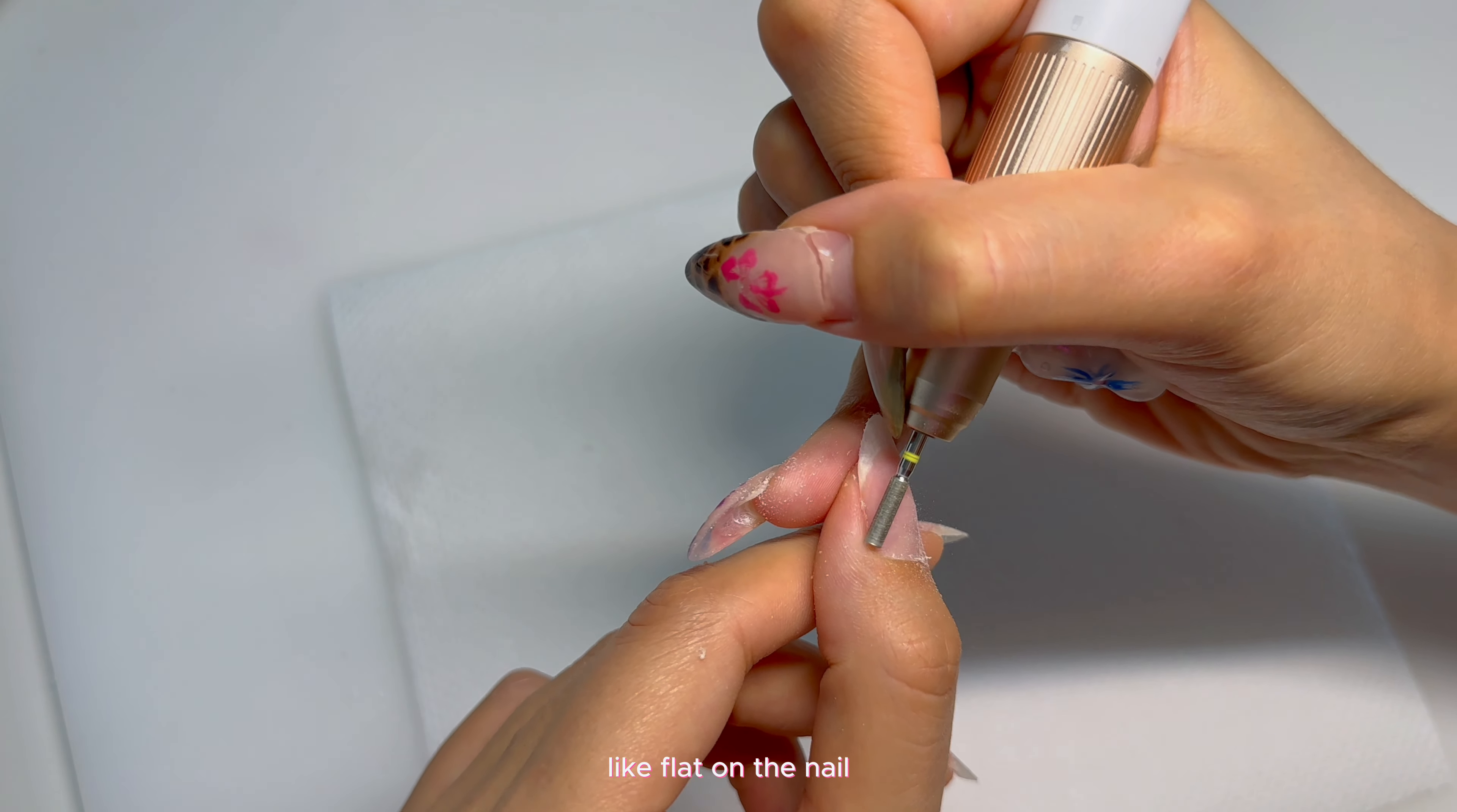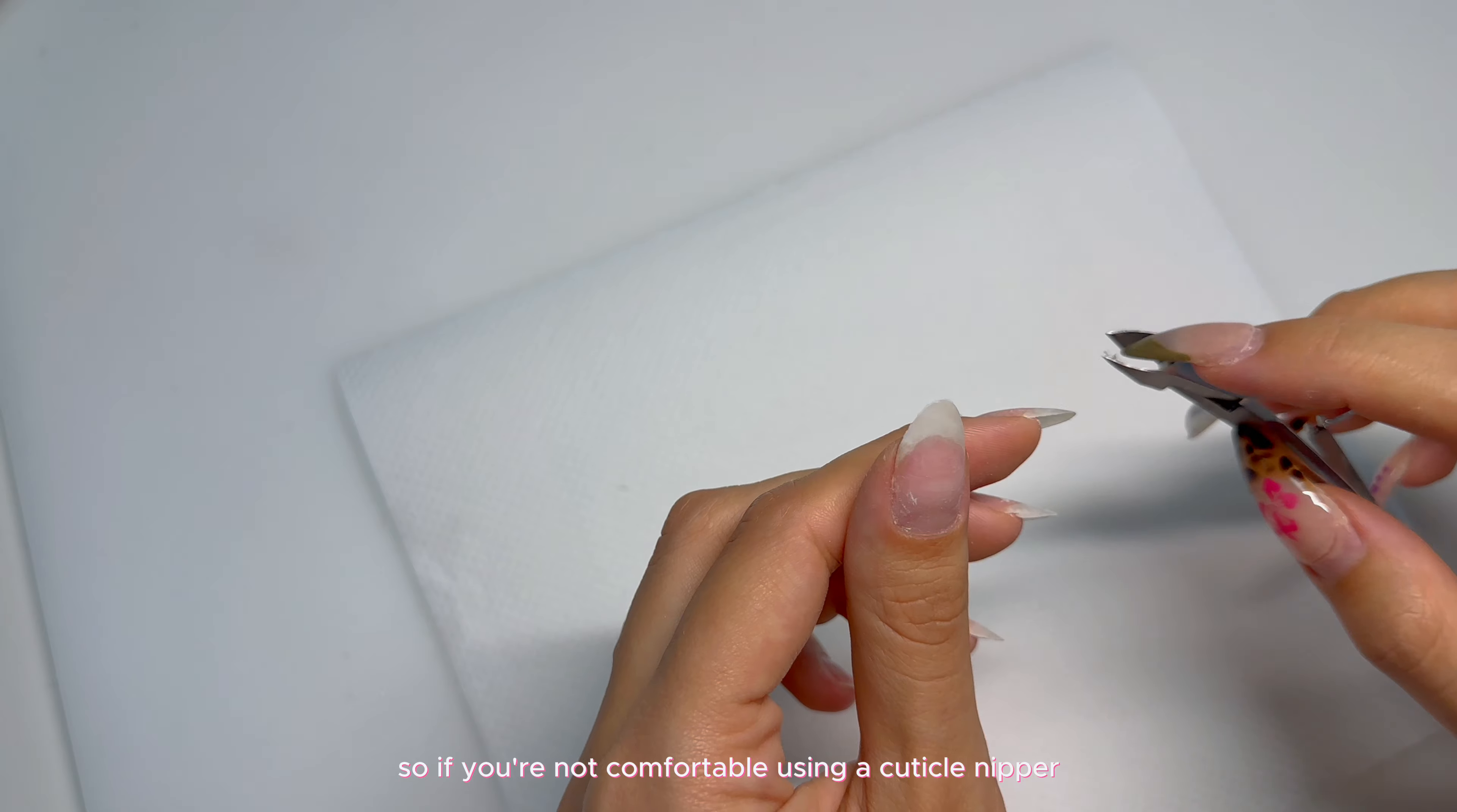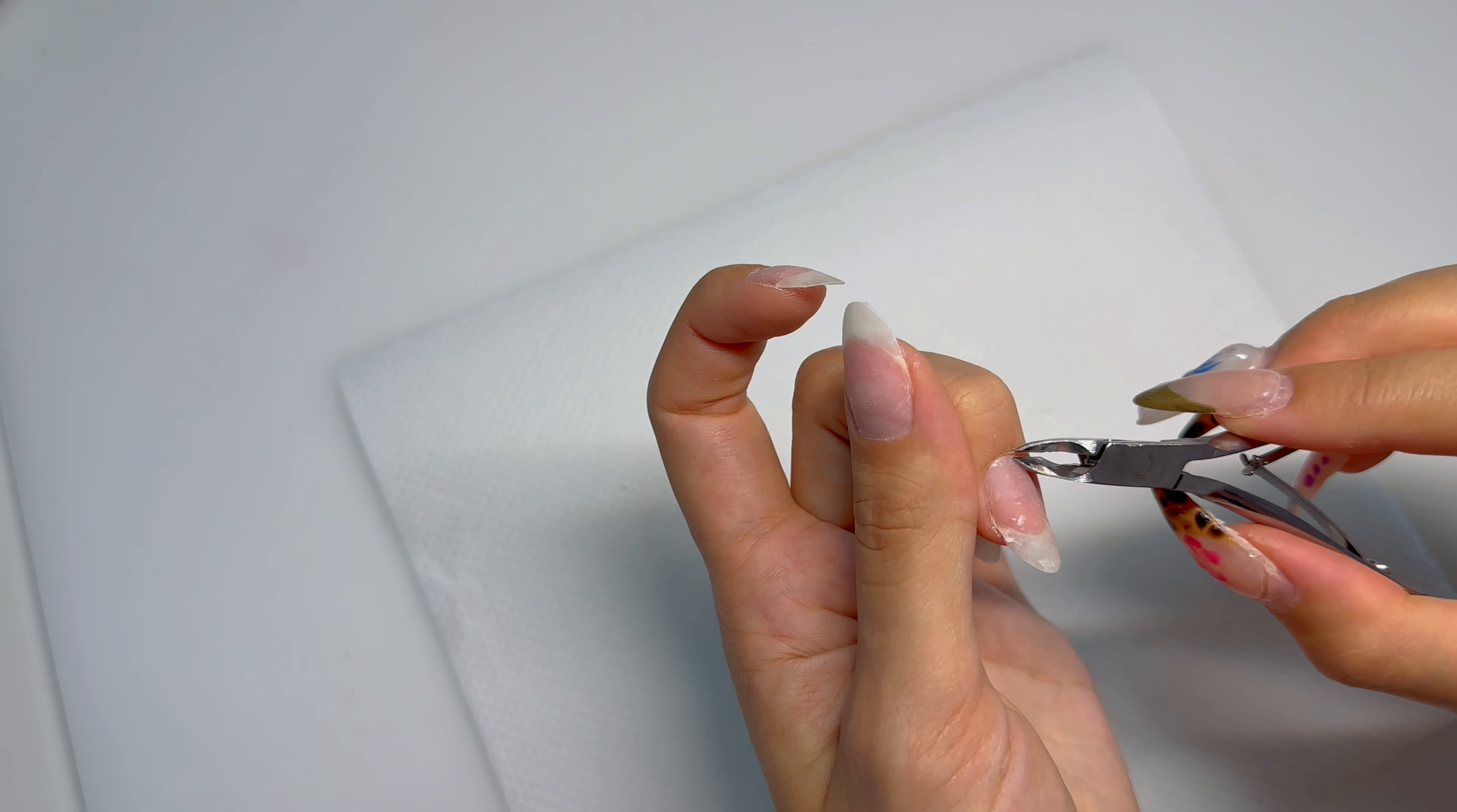After I drill my cuticles, make sure that when you're doing this, you're holding the cuticle bit very flat on the nail and you're not drilling into your nail. Do it very gently. After I dust that off, I'm going to grab my cuticle nipper and cut my cuticles. This step is also very risky, so if you're not comfortable using a cuticle nipper, just skip it. It doesn't really matter. I just do it to make it look clean and aesthetically pleasing. It's not dangerous to cut your cuticle at all, so do your research and make sure you're comfortable with it.